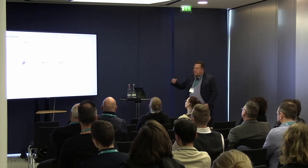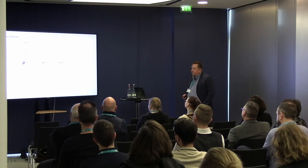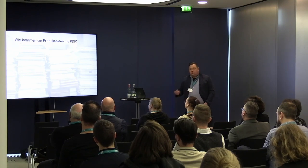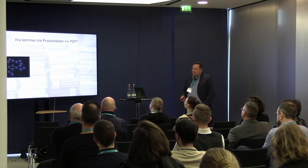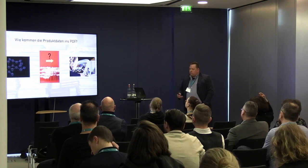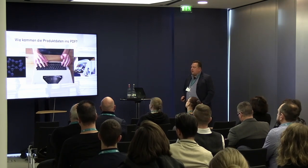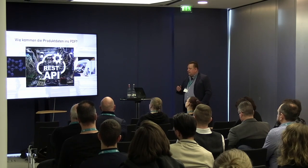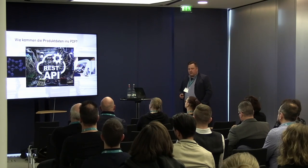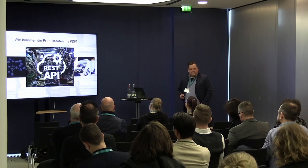Now we've done all of this in PIM — we have the data, we've built the structures, we've got the product data, everything is nicely maintained. But how do we actually turn this or convert this into a catalog or a PDF file? We could type it in manually, which would not make a lot of sense. And that's where we really benefit from the REST API. Through the REST API, you can actually process and edit everything. It is very open, and through the REST API we can also serve print systems.